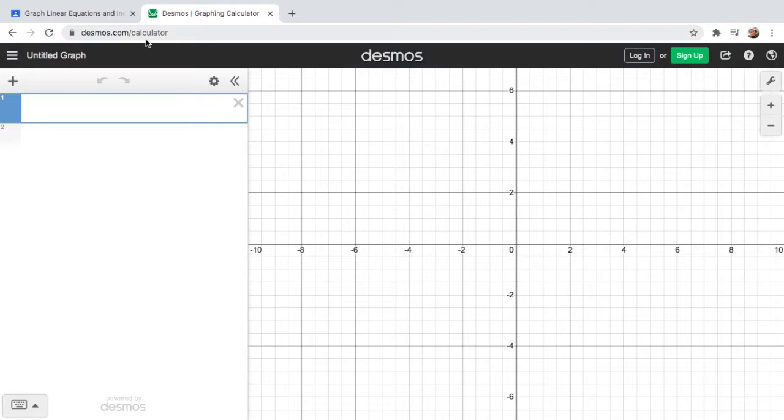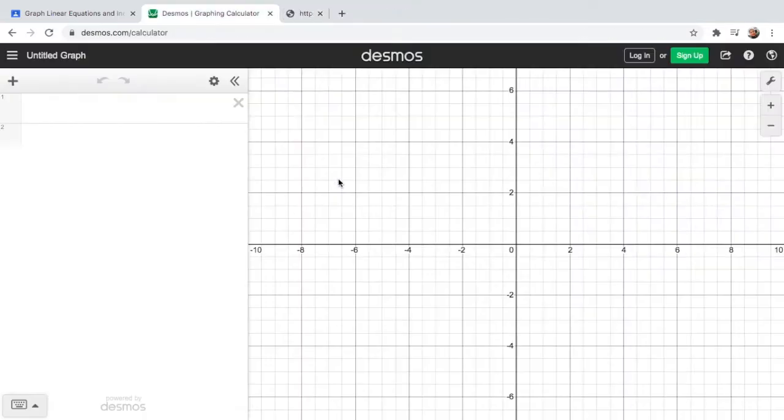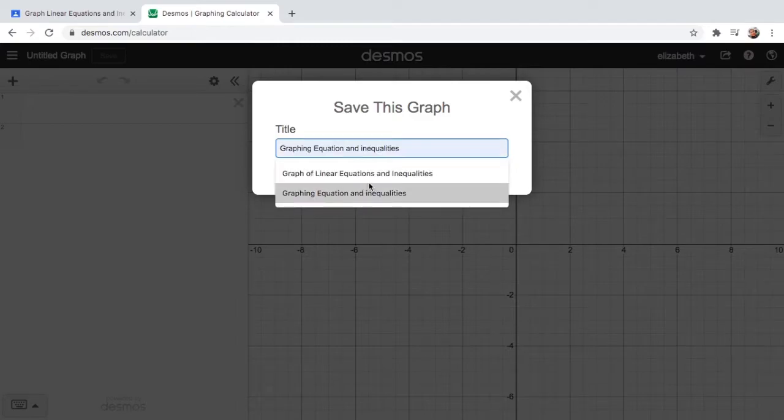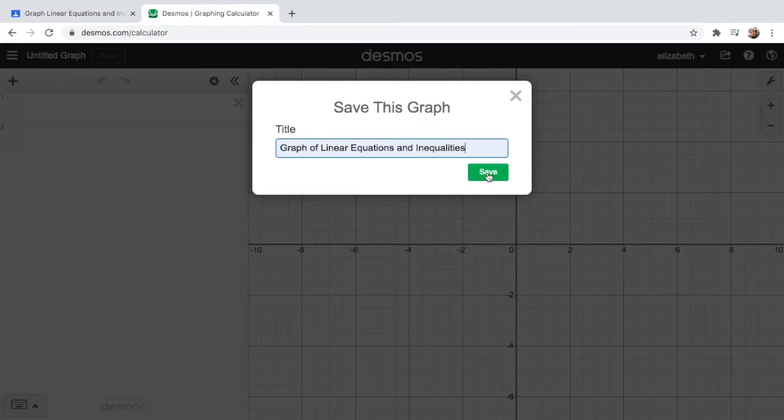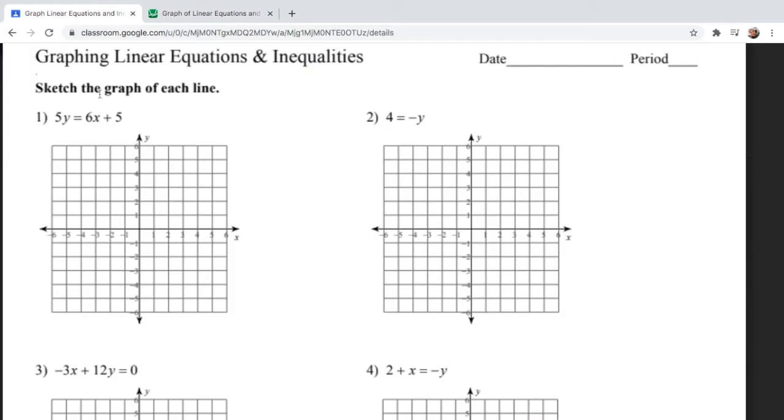So let us have the following examples: sketch the graph of each line. Let us open desmos.com calculator. If you want to save your work, please log in using your Google account. If you don't have a Google account, please create one. My name is there, and you can put a title on your graph to save it. So this is graphing linear equations and inequality. Then let us go to the first problem.